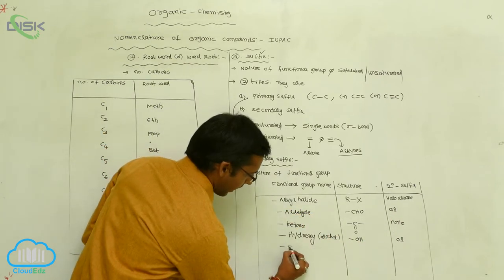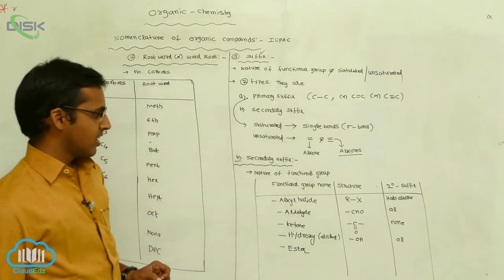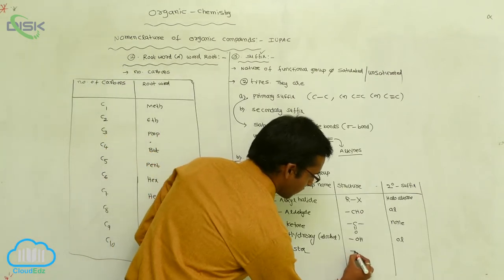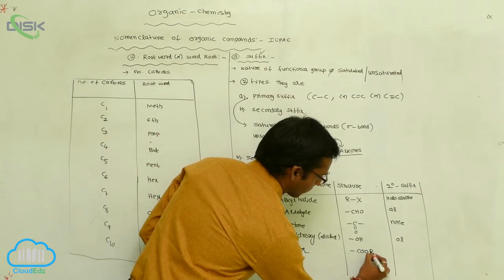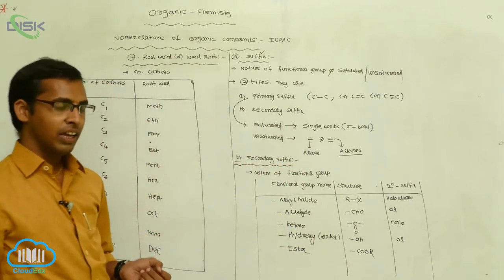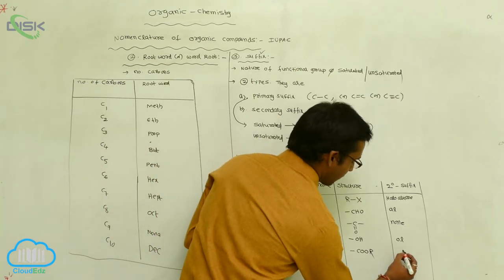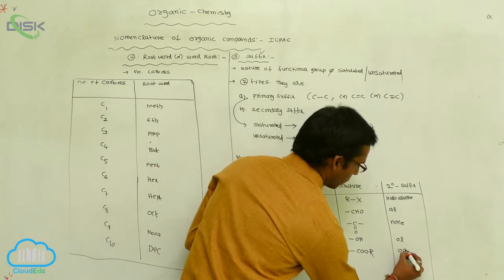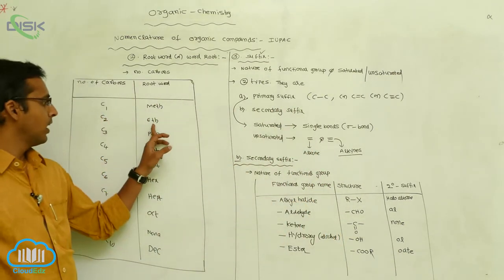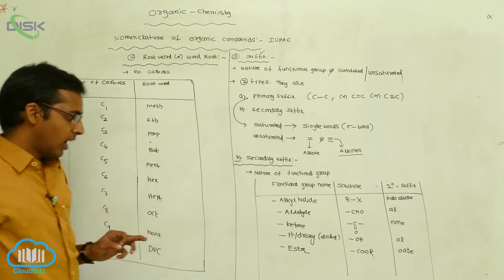If an ester group acts as the functional group, its formula is –COOR, where R is an alkyl group. The secondary suffix for esters is 'oate'. So the names become methanoate, propanoate, butanoate, pentanoate — the suffix is 'oate'.